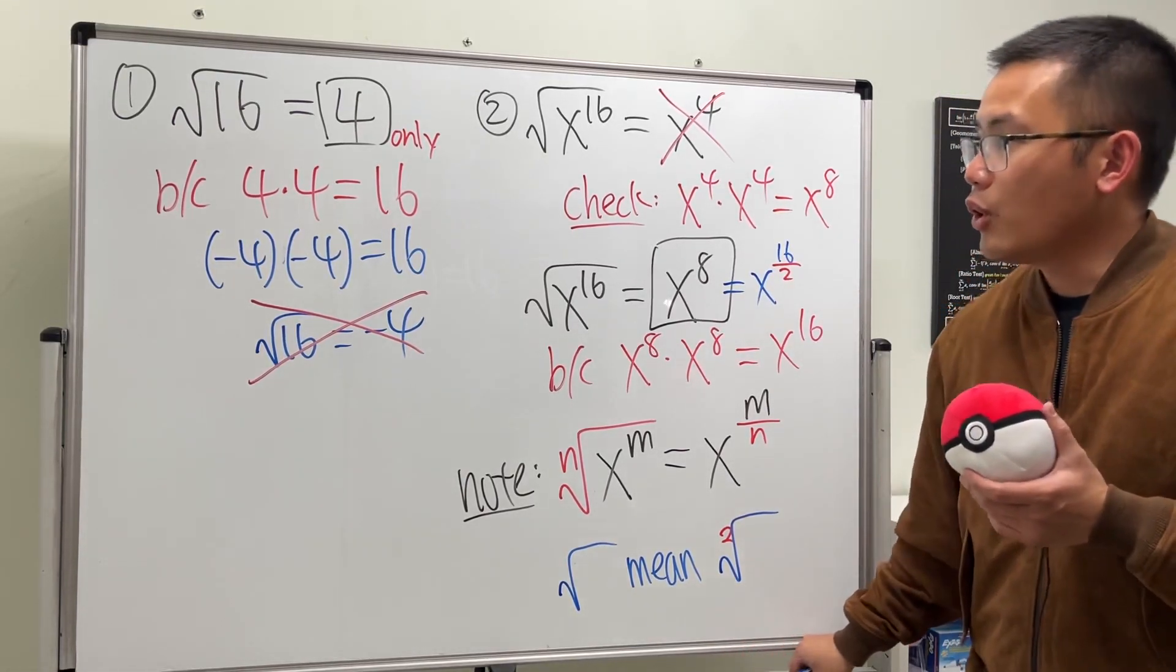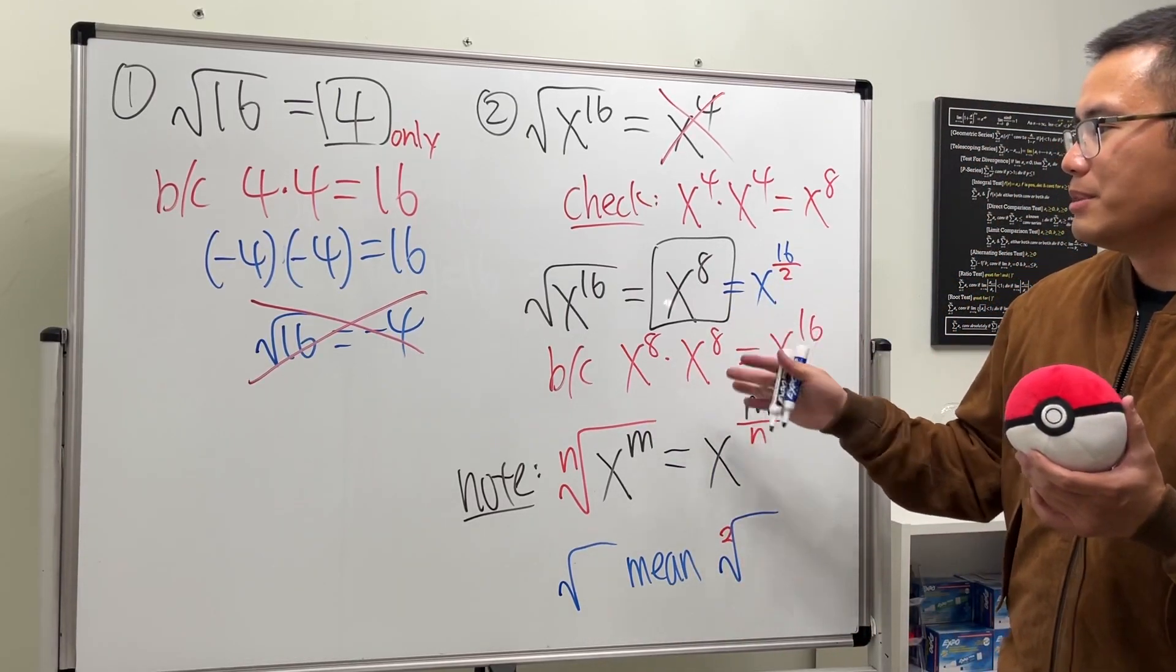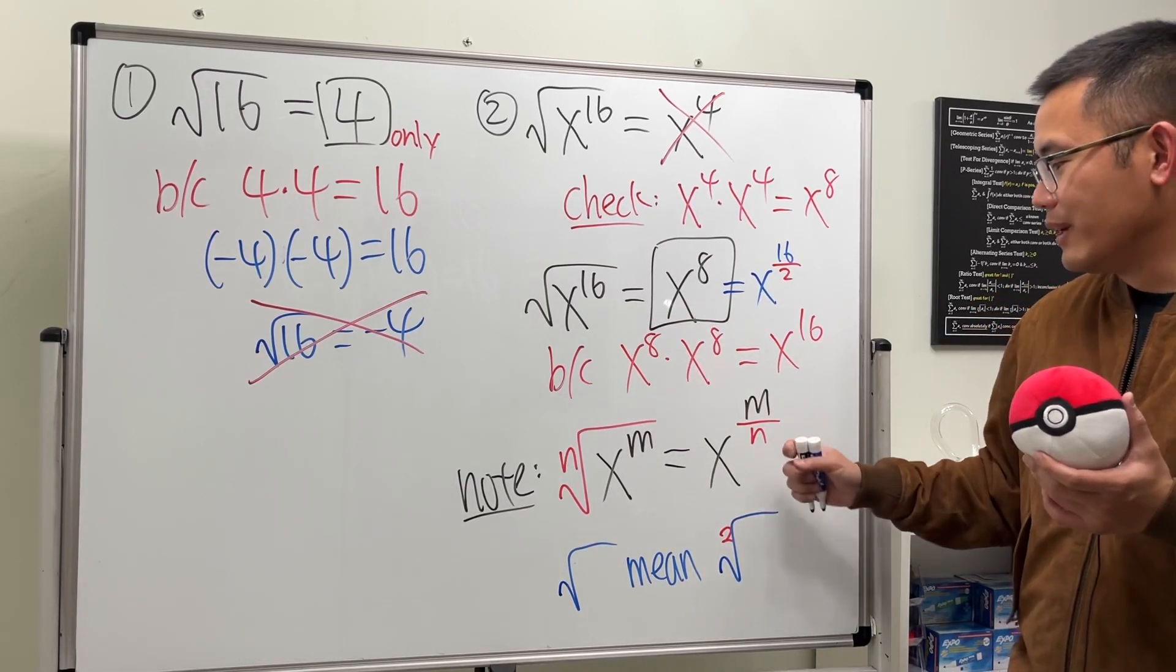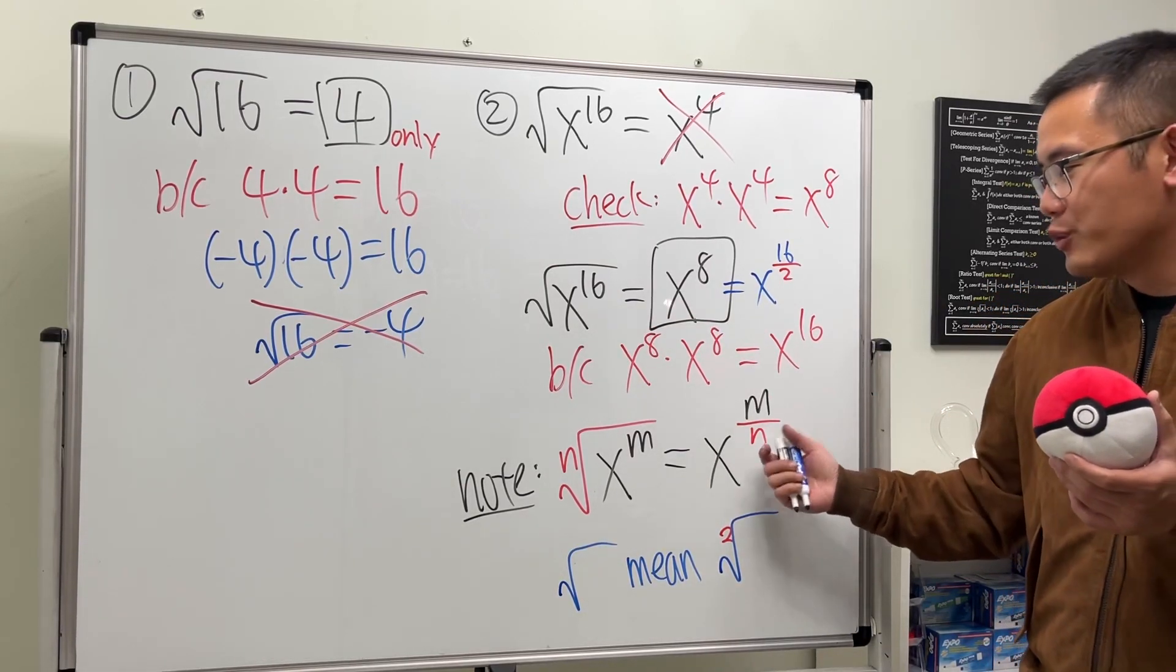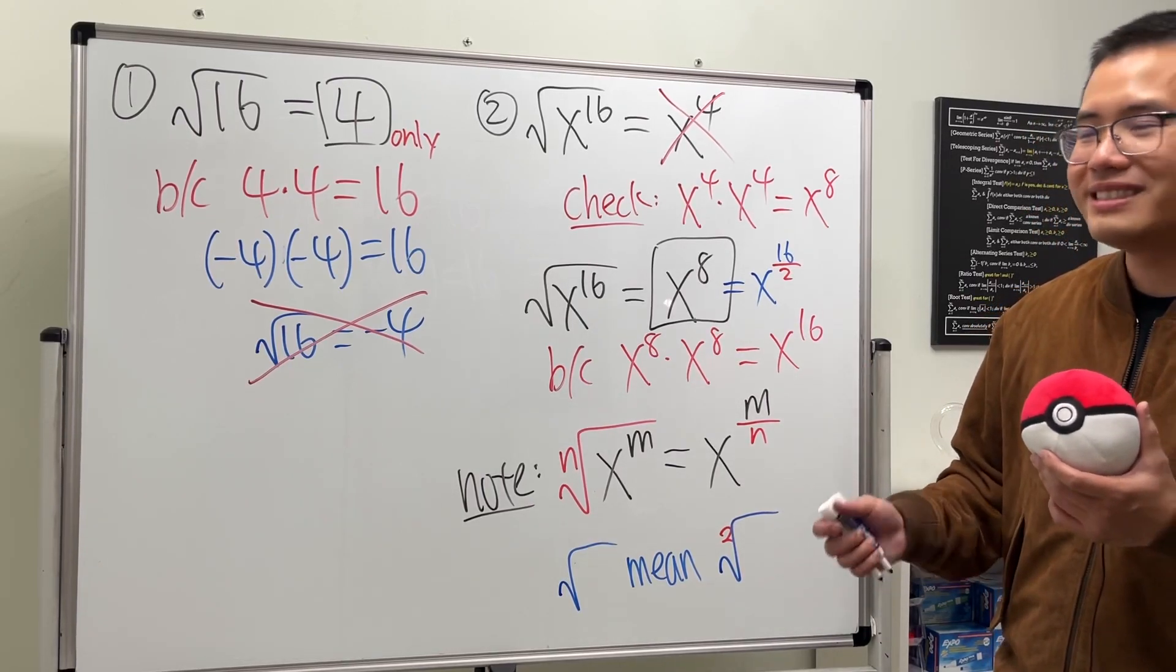Alright, so hopefully this right here helps and you guys understand how to simplify radicals with exponents inside. And then also this is like the introduction to rational exponents. If you guys need more help, check out my other videos for this. That's it.